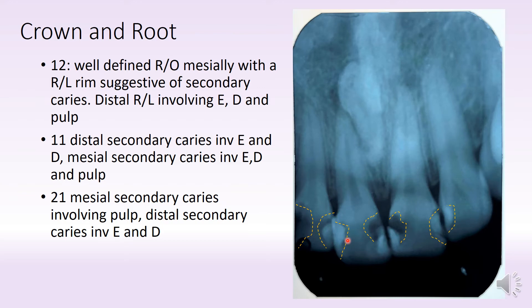You have a radiopacity surrounded by a radiolucent rim. On the mesial surface also we have a similar situation — another secondary caries, again quite deep, which is already involving the center portion of the tooth, which is the pulp.